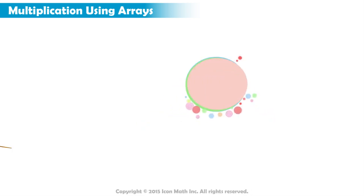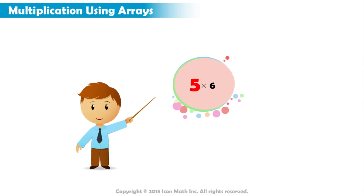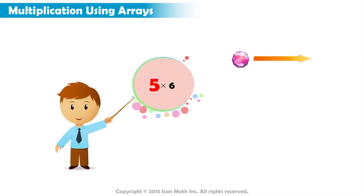Now, let us try to find the product of five times six by creating an array. The first factor represents the number of rows, so we draw five rows. This is the first row, second, third, fourth, and fifth.